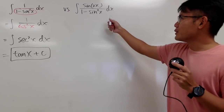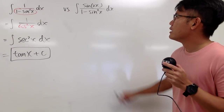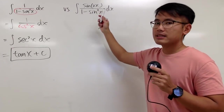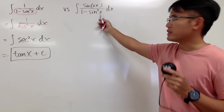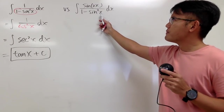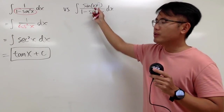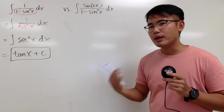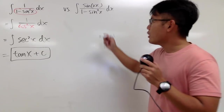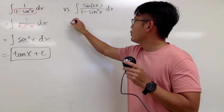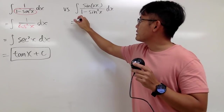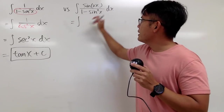Now let's take a look at the second integral. Notice we have sine of 2x, but the input here is just x. We do know we have a double angle identity for sine, so let's use that first. This right here is the same as integrating...